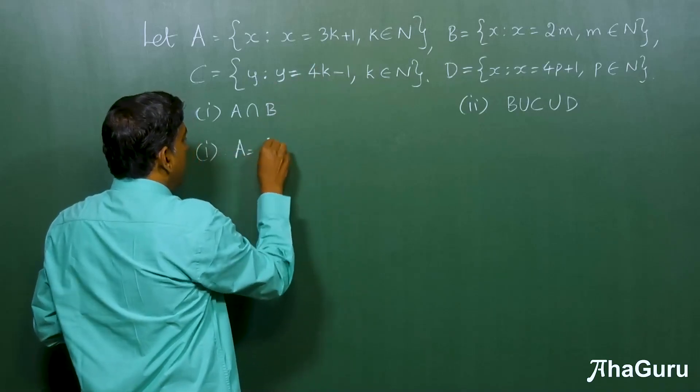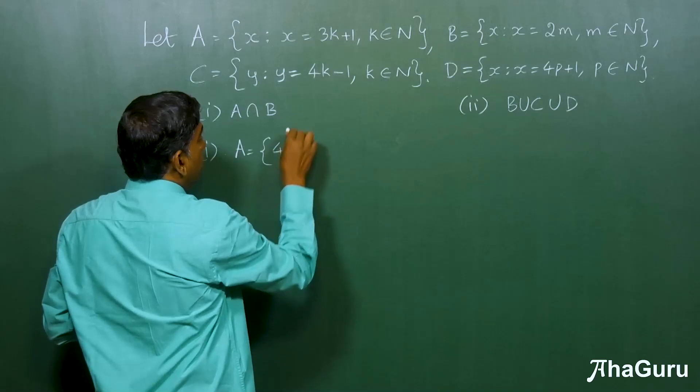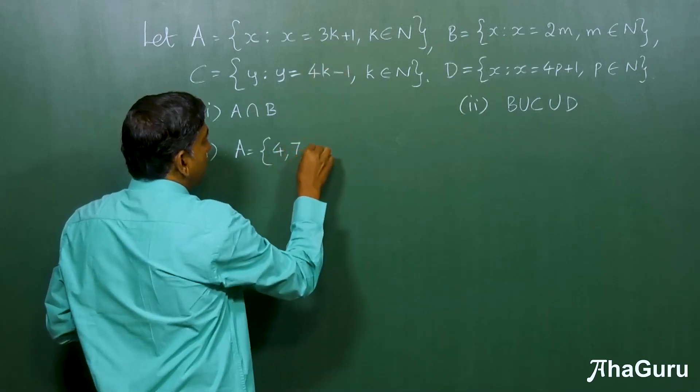we get A equals, if you put k equals 1, you get 4, k equals 2, we will get 7, like that.